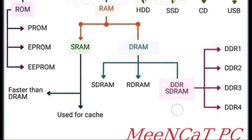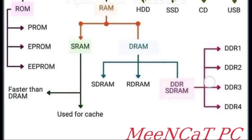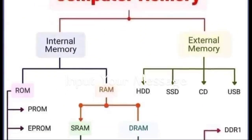DDR SDRAM is further divided into four parts. First is DDR1, second is DDR2, third is DDR3, and fourth is DDR4. All of these are part of our internal memory.